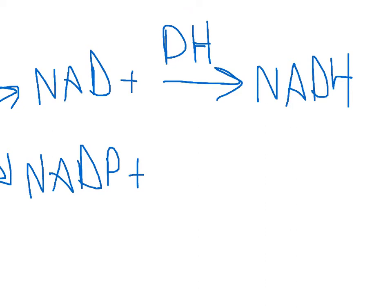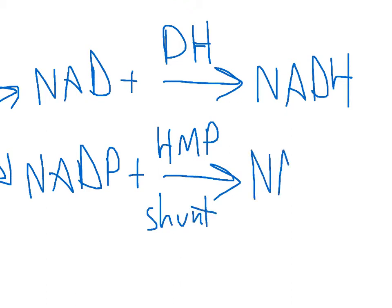NADP+ is used in the HMP shunt, or the hexose monophosphate shunt, and when it's used in that way, it makes NADPH.